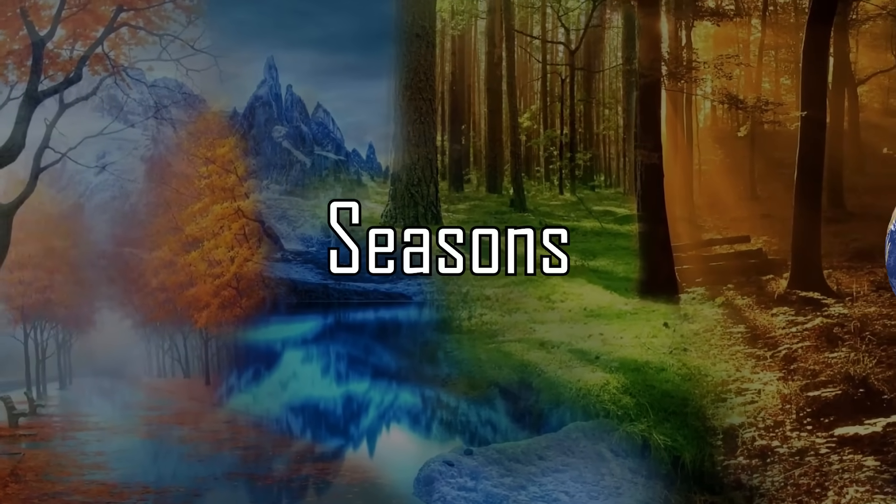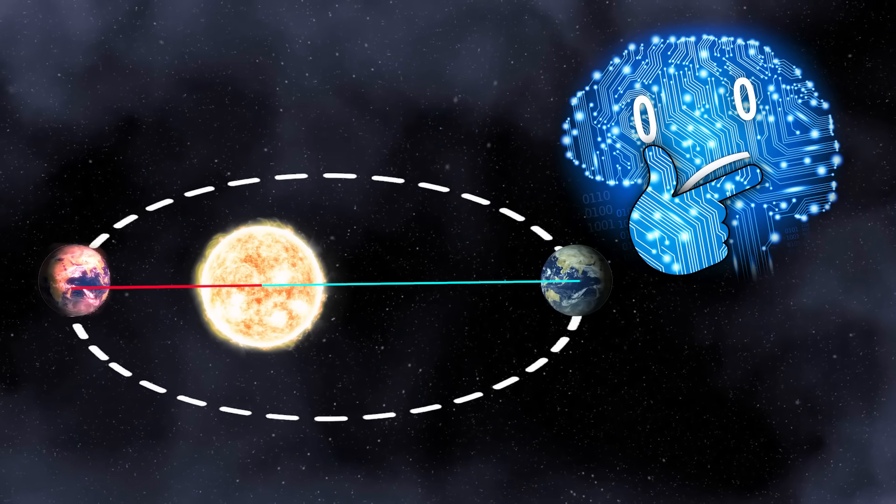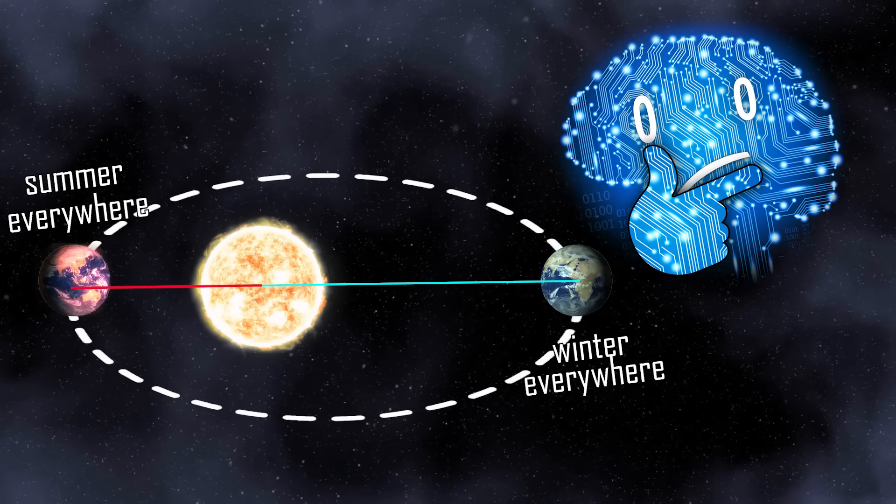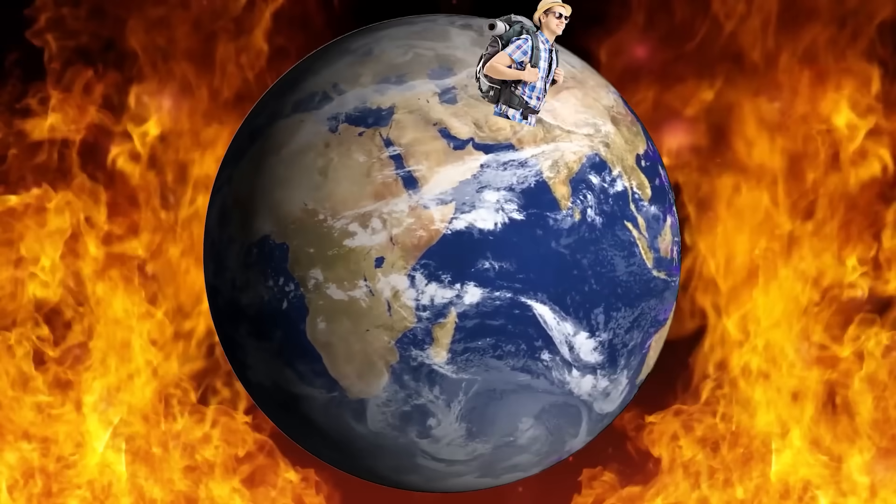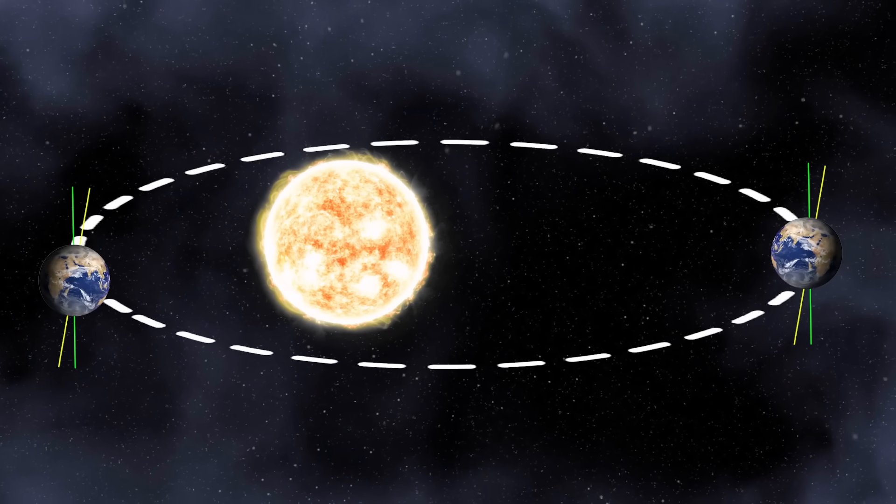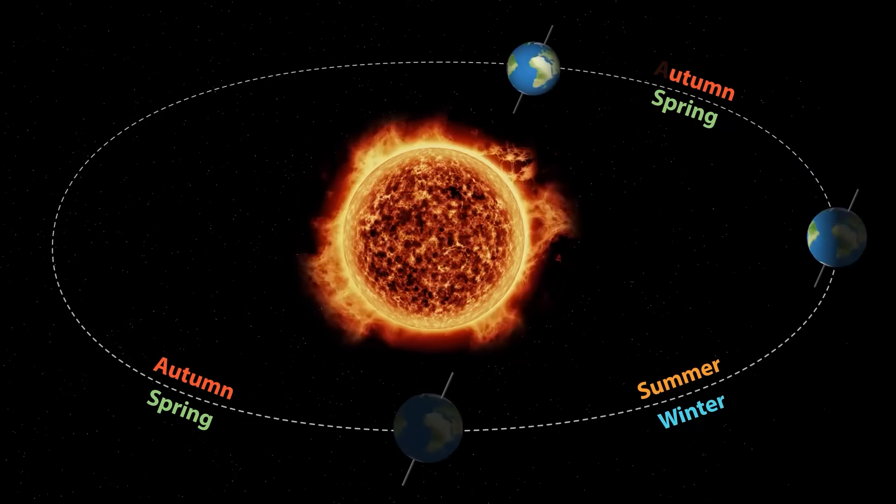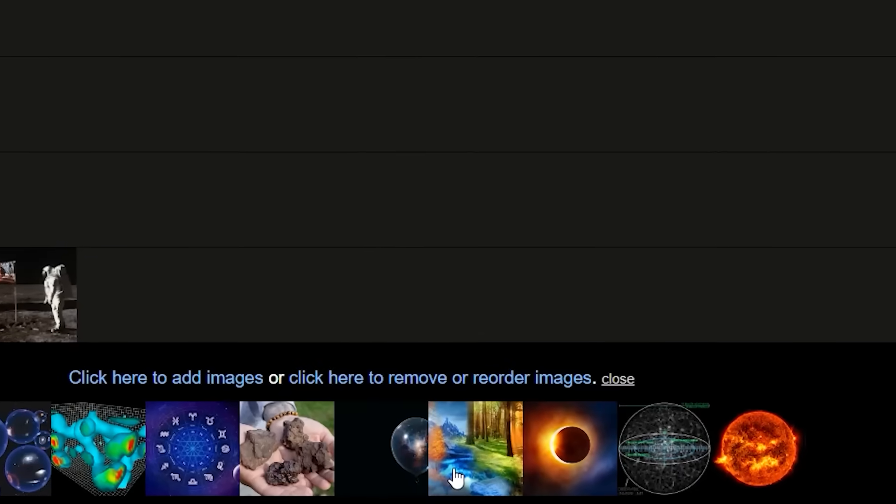Seasons are caused by Earth's distance from the sun. If that were the case, summer would happen at the same time both in Europe and Australia. Spoiler alert, don't go sunbathing in Australia in August. What causes seasons is the Earth's tilt. When your hemisphere leans toward the sun, sunlight hits more directly and for longer, and vice versa.